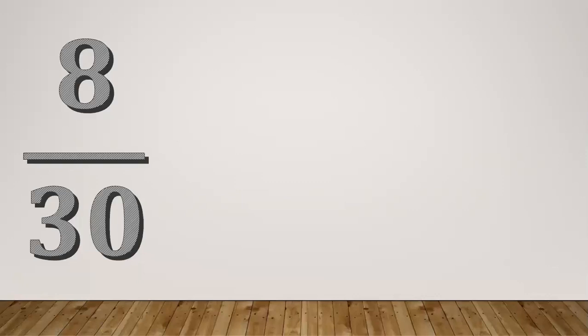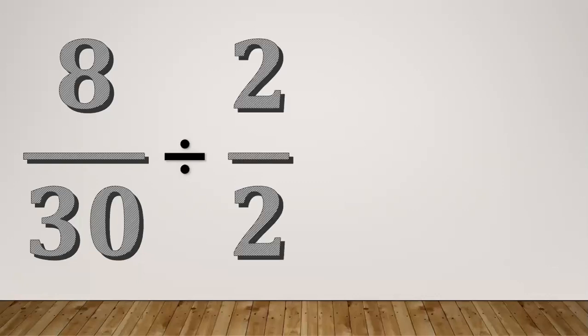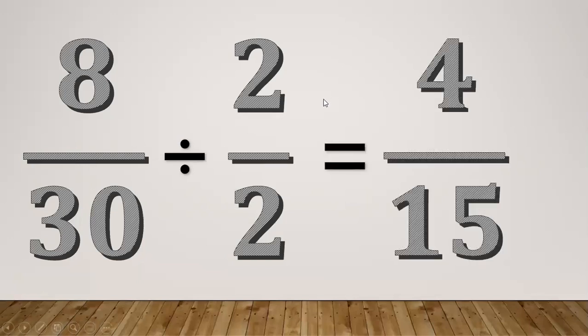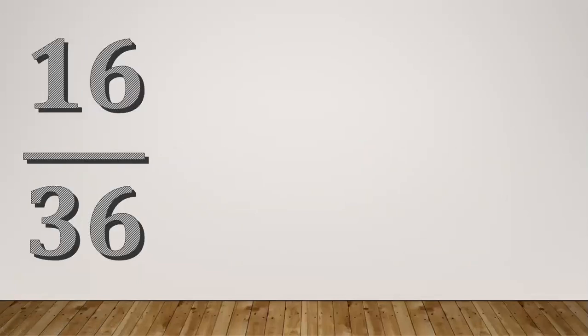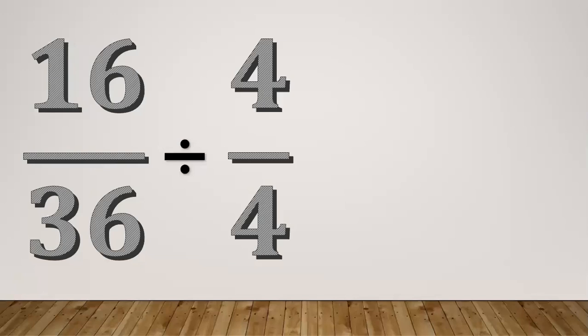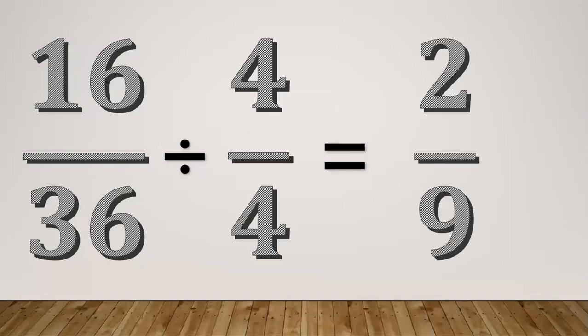Another example: 8/30 is divisible by 2. So 8 divided by 2 equals 4, and 30 divided by 2 equals 15. The answer is 4/15. Another one: 16/36 — the common factor is 2, so 16 divided by 2 equals 8, and 36 divided by 2 equals 18. The answer is 8/18.